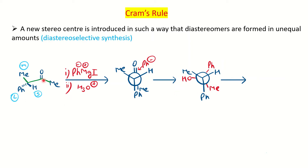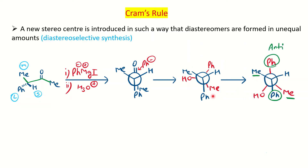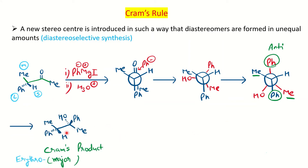You can see the green line — in this configuration the two Me groups are anti to each other, so we have to maintain this anti configuration. We rotate the molecule so that the two Me groups come anti to each other. By rotating 60 degrees, the two Me groups become anti to each other, and now we can see the position of the Ph group — the nucleophile is anti to the Ph, meaning opposite to it.